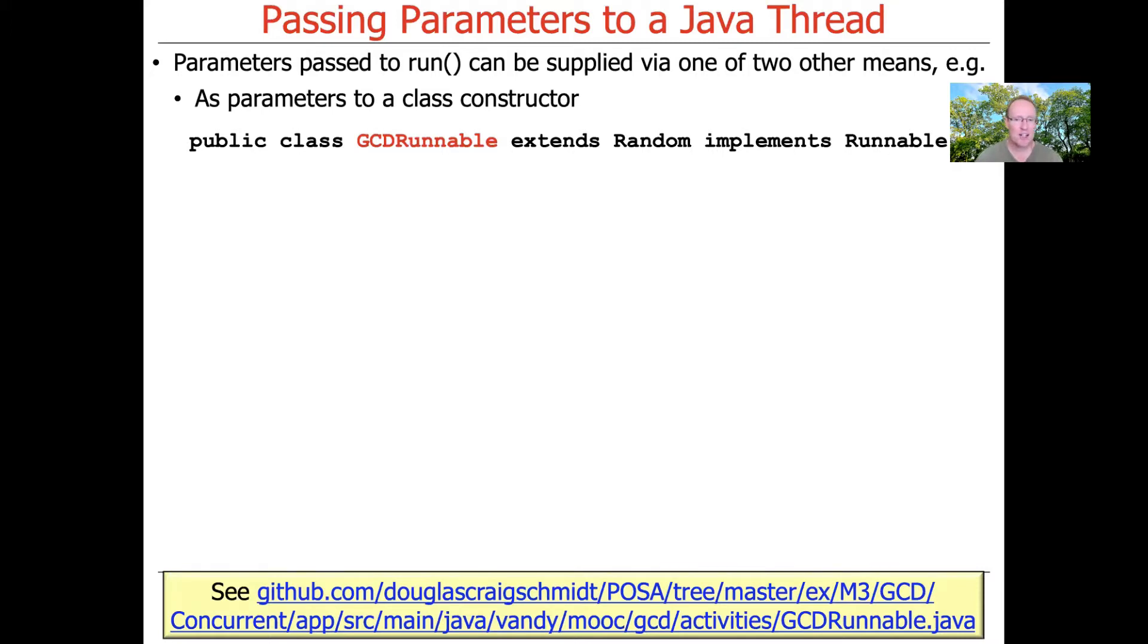So if we were to go take a look at the GCD runnable.java file, which we'll probably take a look at later when we go back and look at the example in more detail, you'll see that there's a class called GCD runnable, which for various reasons extends the random class and implements the runnable interface.